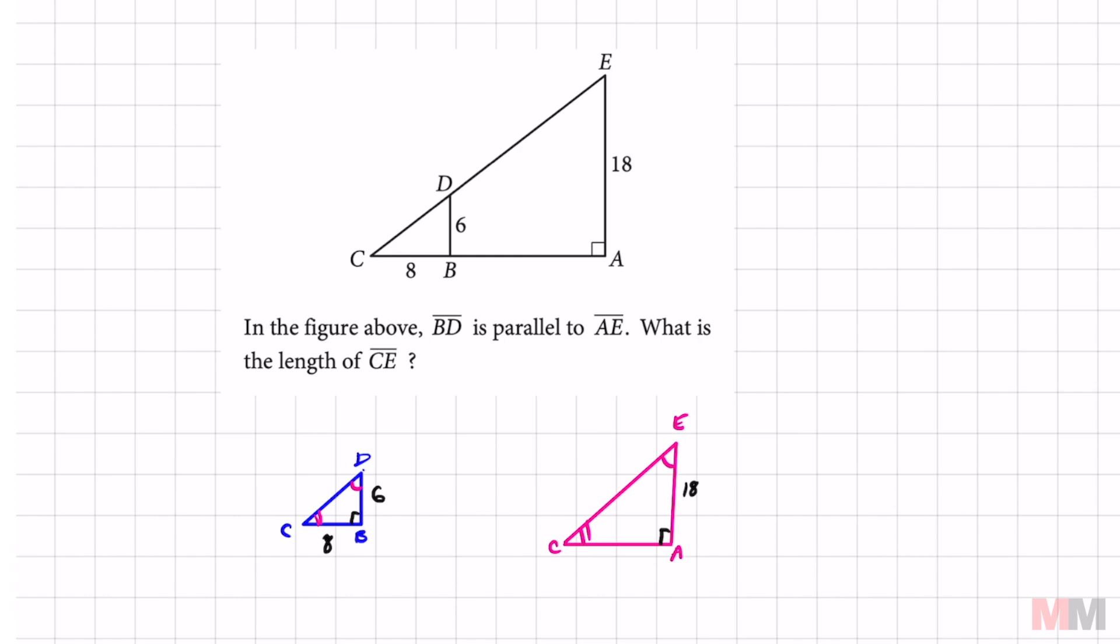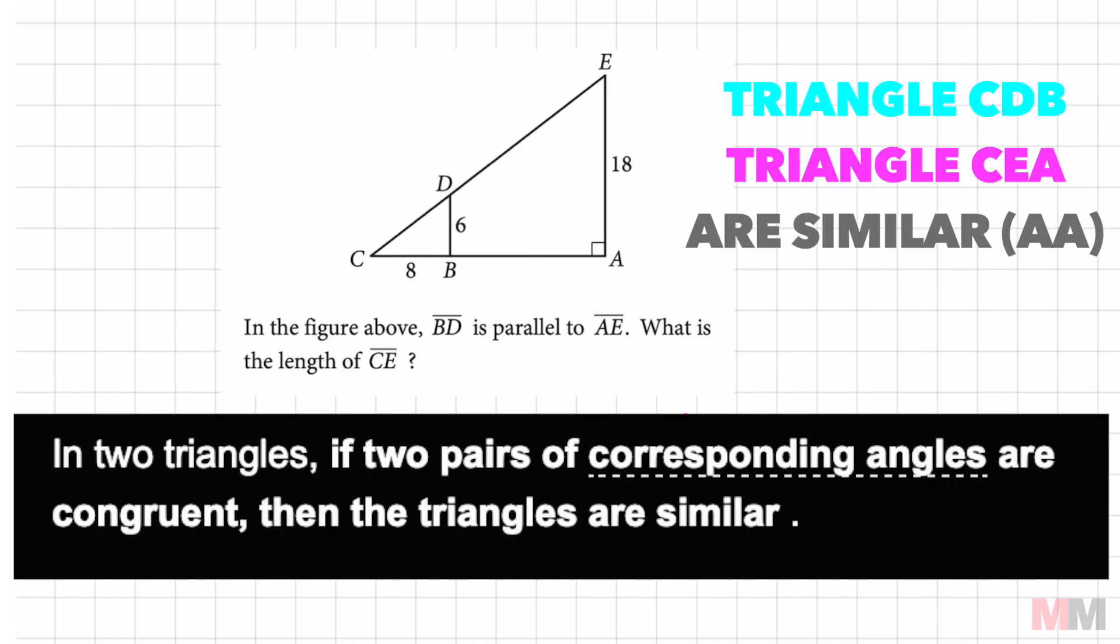And now that I have two angles congruent with each other in both of those triangles, these two triangles are similar.